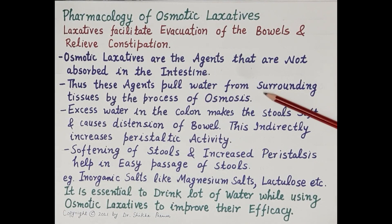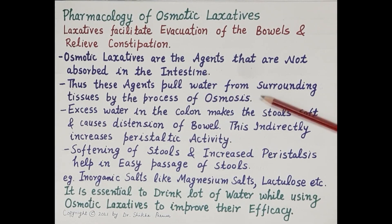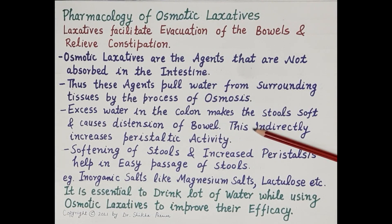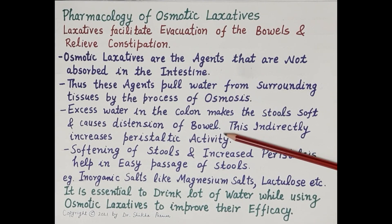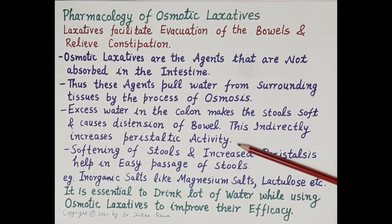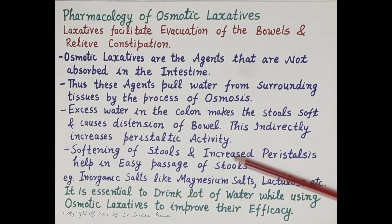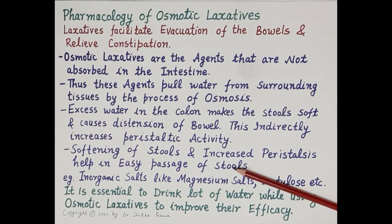Osmotic laxatives are agents that are not absorbed in the intestine. As clear from the name, osmotic agents pull water from the surrounding tissue into the intestine or the colon by the process of osmosis. Excess water in the colon makes the stool soft and also increases the volume of stools. When there is an increase in volume, it puts pressure on the wall of the GIT, causing distention or stretching of the bowel wall, which indirectly increases peristaltic activity. Softening of stools and increased peristalsis help in easy passage of stools and provide relief from constipation.